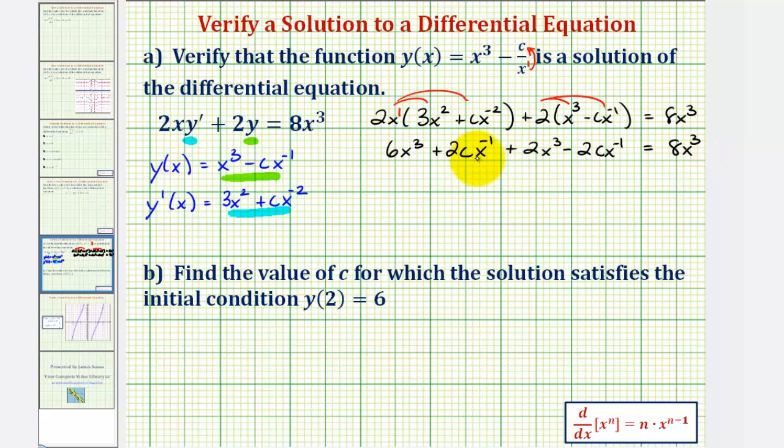So looking at this left side, notice how we have two like terms. And they're opposites. 2c, x to the negative one minus 2c, x to the negative one would be zero. So, leaving us with 8x³ equals 8x³, verifying that y of x is the solution to the differential equation.